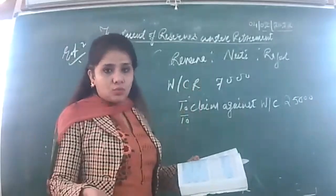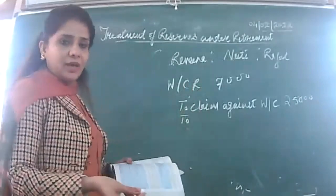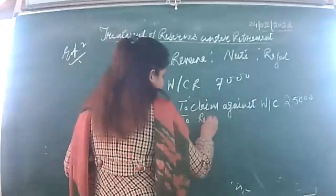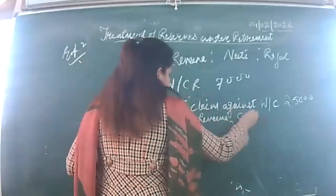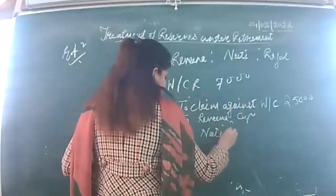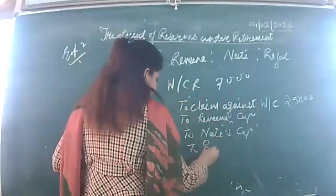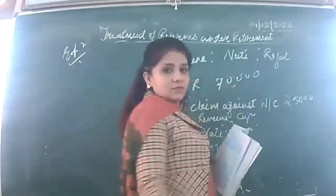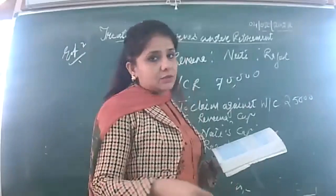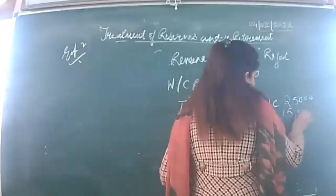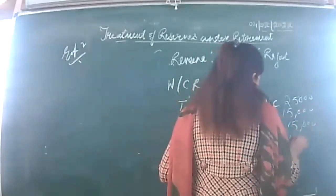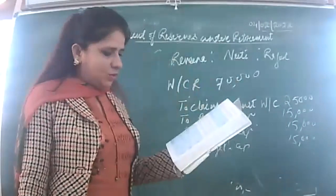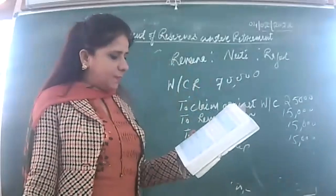In the absence of profit sharing ratio information, partners are supposed to share equally. Done — 45,000 divided, 15,000 each. Narration: liability for workmen compensation claim created, and surplus workmen compensation reserve transferred to partners' capital in their old ratio.